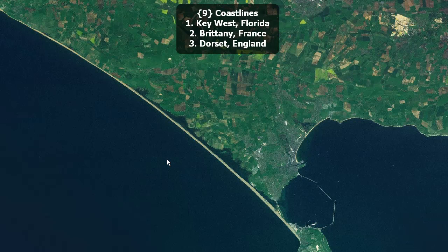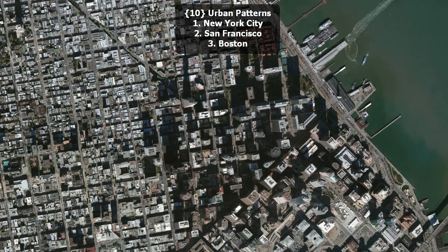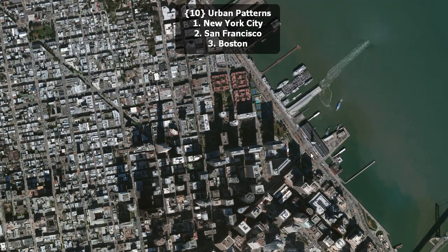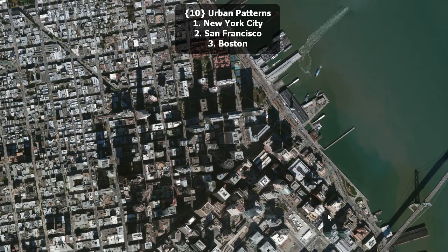Wonderful coastline. Key West, Florida; Brittany, France; or Dorset, England? Urban patterns. Is this New York City, San Francisco, or Boston? What about the coastline here and the street pattern and where the actual water is gives you clues as to where this might be?